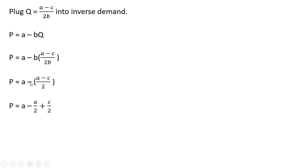I'm going to distribute this minus sign, so it's minus a/2, and then minus minus gives us plus c/2. A minus half of a will just be one half a plus c/2. Simplifying, that is the equilibrium profit maximizing price.